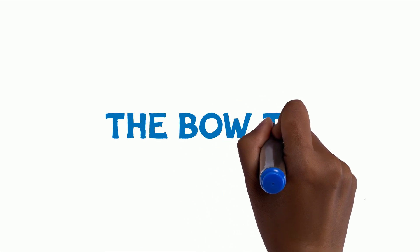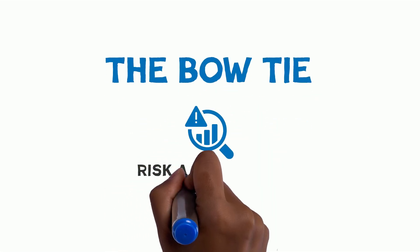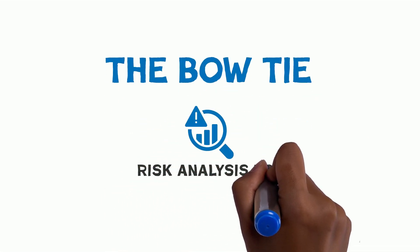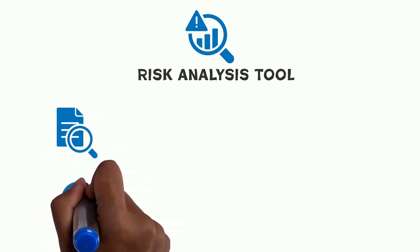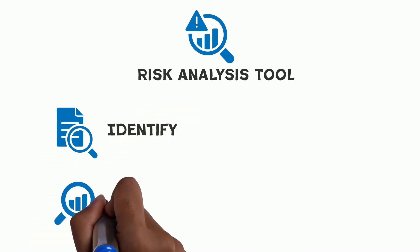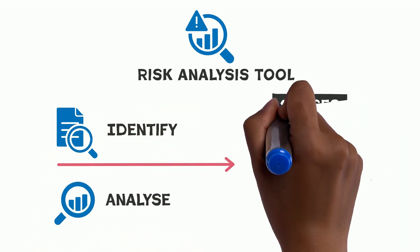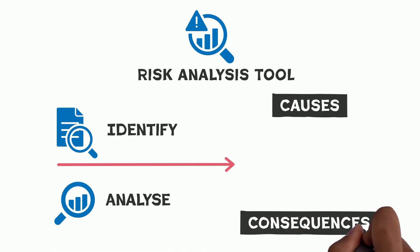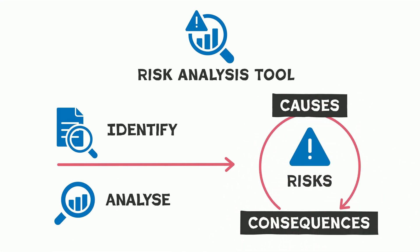The bowtie is a simple but effective tool for risk analysis. It can be used during the risk assessment process to help identify and analyze the causes and consequences of risks identified.